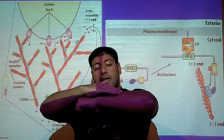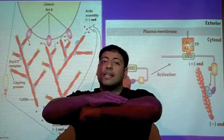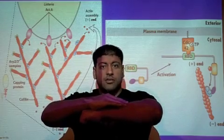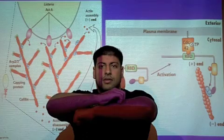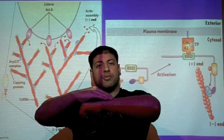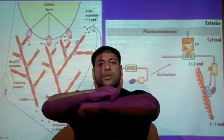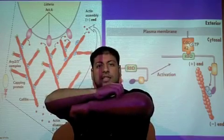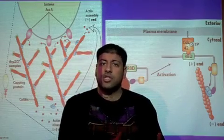...and then on the back end of the cell, we have an actin and myosin interaction through muscle contraction, and that will contract the back end. So the cell is literally going to stretch due to actin polymerization at the front end, and then the back end will contract with actin and myosin. And this continues. So this is how the cell moves along the extracellular matrix.